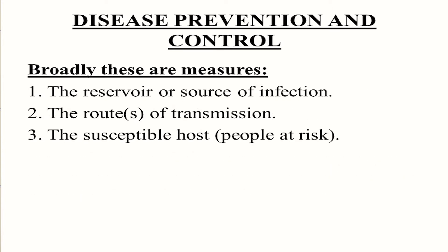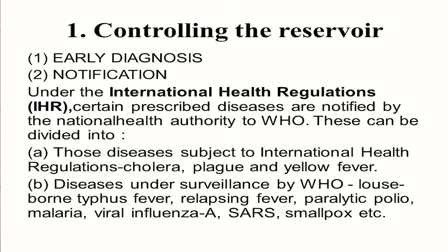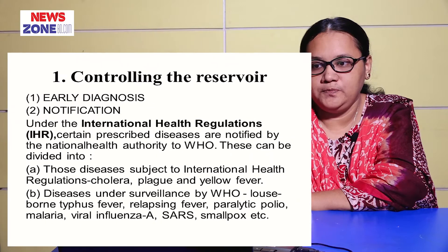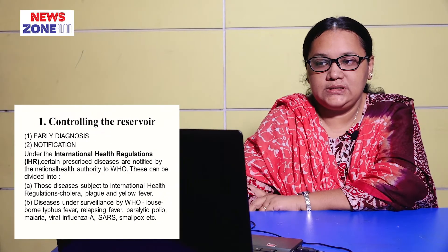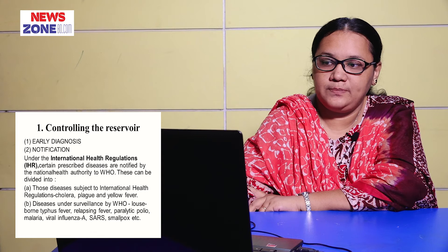For disease prevention and control, broadly there are three measures: reservoir or source of infection control, route of transmission control, and susceptible host control. For controlling the reservoir: early diagnosis, then notification — under the International Health Regulation (IHR), certain prescribed diseases are notified by the National Health Authority to WHO. These include diseases subject to international health regulations: cholera, plague, and yellow fever.